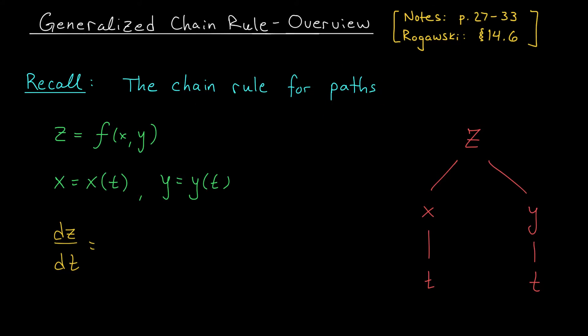As a quick reminder, we use the chain rule for paths when dealing with a function z of multiple variables, say x and y, and those variables in turn depend on a third variable, say t. We can model this situation with one of these tree diagrams. Our big function is shown at the top, the intermediate variables x and y are in the middle, and the independent variable t is at the bottom. Looking at the diagram, you can see that z really depends on t — t changes x and y, which in turn change z. So if z depends on t, we could ask for the derivative of z with respect to t.